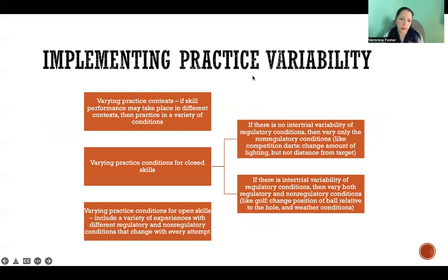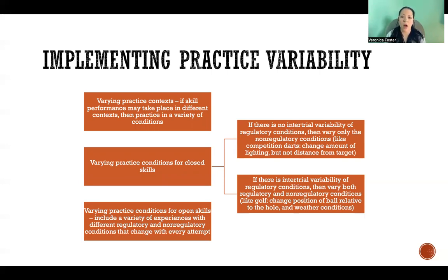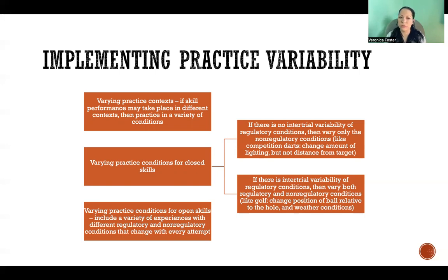When implementing practice variability, we want to vary the practice context. If the skill is going to be performed in different contexts — like someone rehabilitating and relearning how to walk — they need to walk in all sorts of contexts: through a crowded mall, through their home, maybe with the lights off at night. During practice, we want a variety of different contexts so we can practice transferring those skills from one context to another.